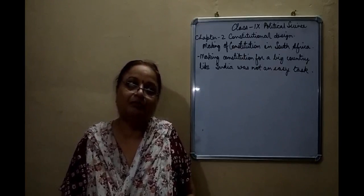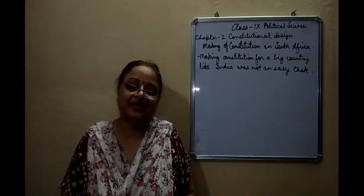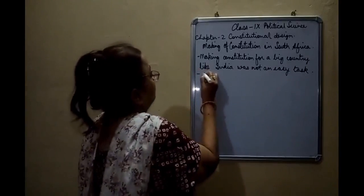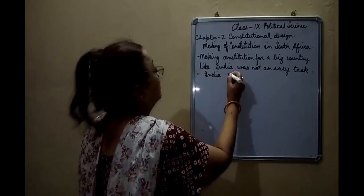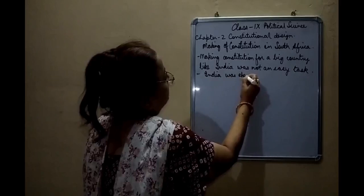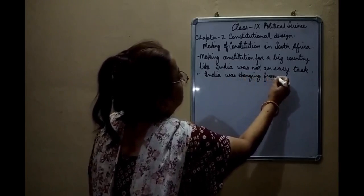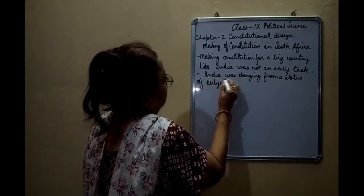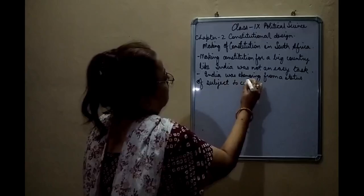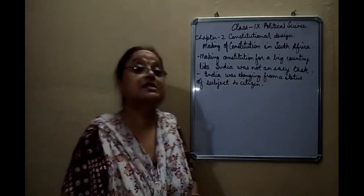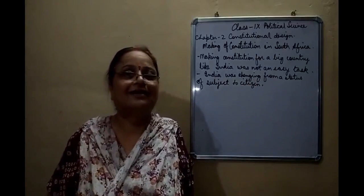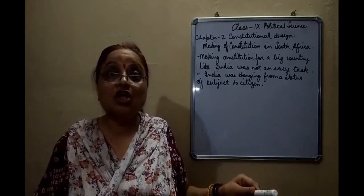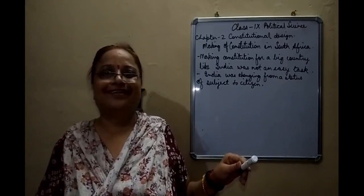India was emerging from the status of subject to that of citizen. India was changing from a status of subject to citizen. Under king's rule, there were subjects — raja and praja. For the king there are the subjects.